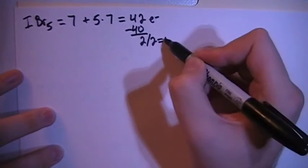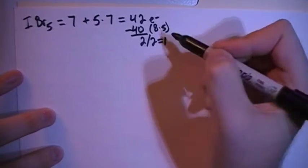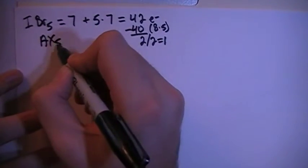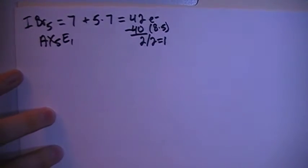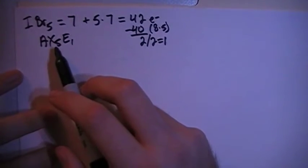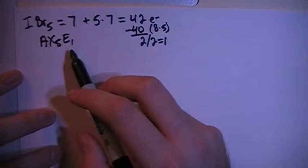Divide that by 2 gives us 1 non-bonding pair. And since 40 is equal to 8 times 5, that means that this is going to have an AX5E1 structure, meaning that there is 1 central atom surrounded by 5 peripheral atoms, and the central atom also has 1 non-bonding pair of electrons located on it.